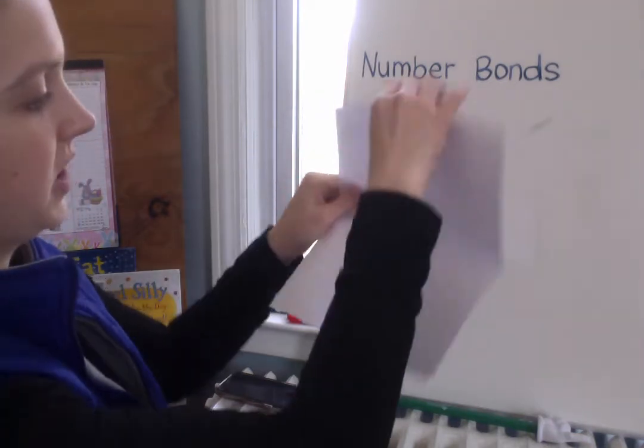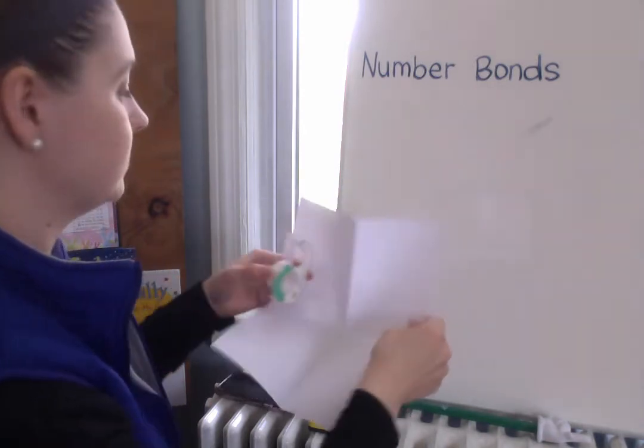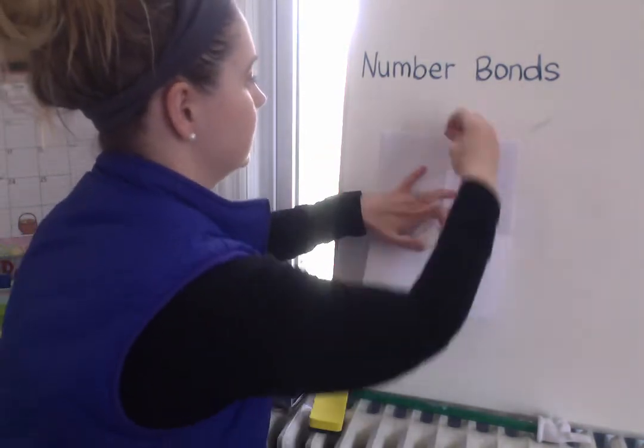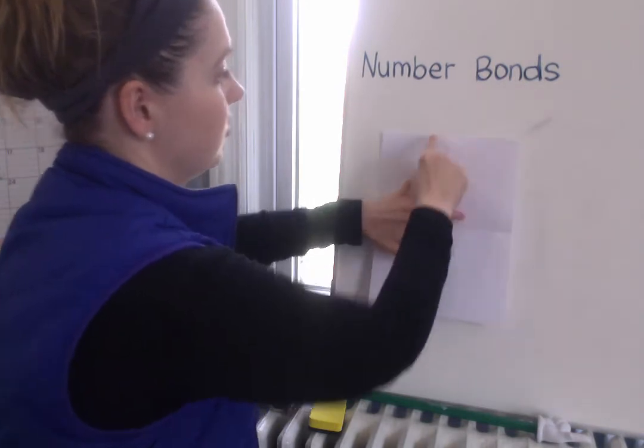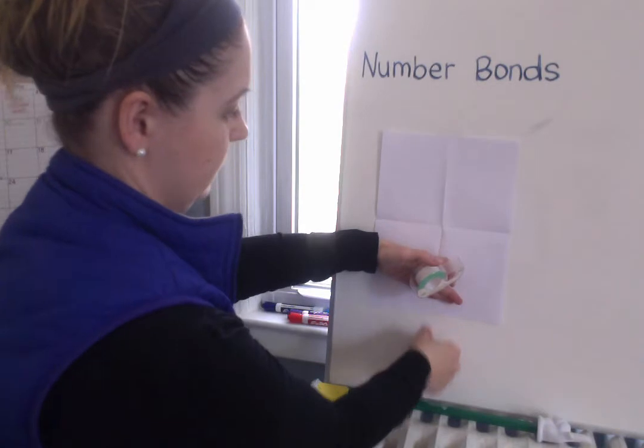Then when you open up your paper you should have four rectangles. What we're gonna be doing today is drawing some number bonds for subtraction and then your activity is going to be to fill in the spots.